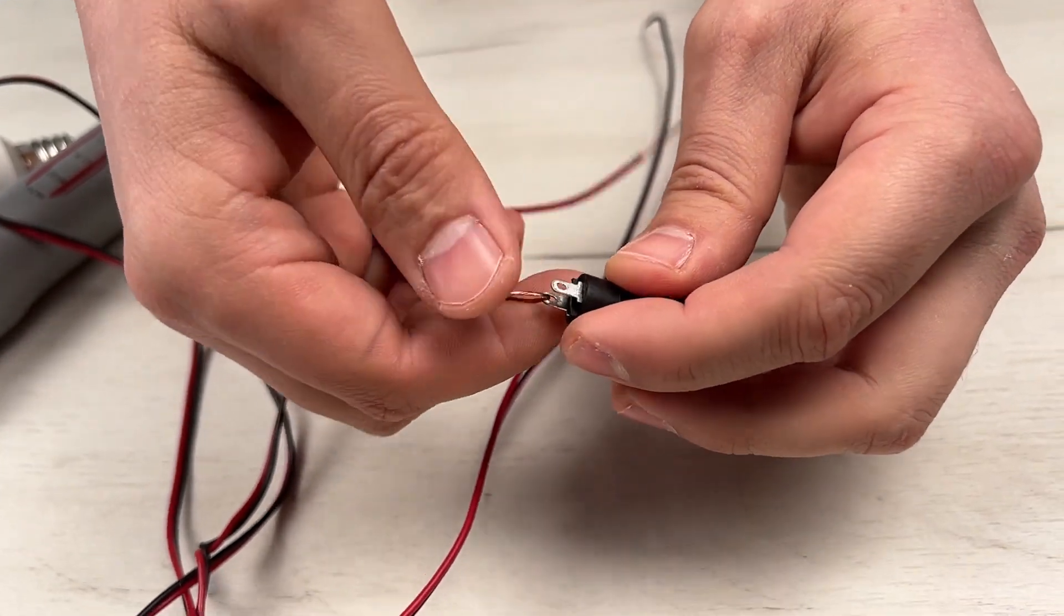Next, let's start connecting the button. If you don't have experience with the soldering iron, don't worry - you can just twist the wires.